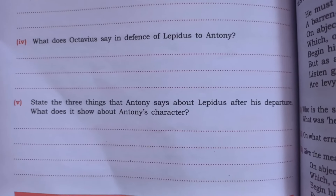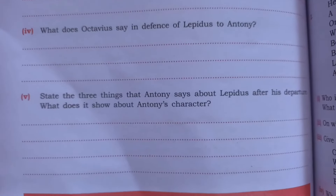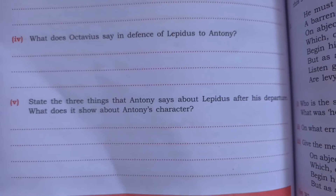Question four: what does Octavius say in defense of Lepidus to Anthony? Octavius says that Lepidus was a good military general and Caesar's friend who had helped in taking control of Rome. But later both Octavius and Anthony planned to disregard him as unfit to be a partner with them in the government of the Roman world.